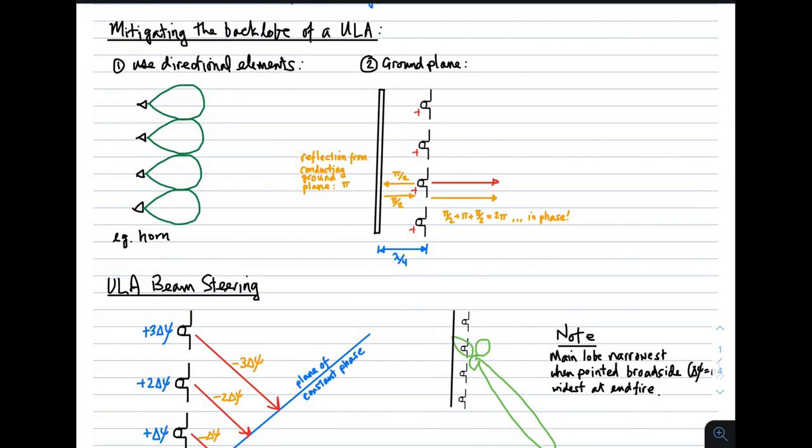Here are some ways you might consider getting rid of that back lobe. One is to use directional elements. Instead of using something like a dipole, perhaps you use something like a horn. A horn is somewhat directive, order 6 to 12, 15 dB or so, with a relatively small back lobe. If you arrange the elements using horns instead, you would have something very strongly directional in one direction and less directional in the back lobe.